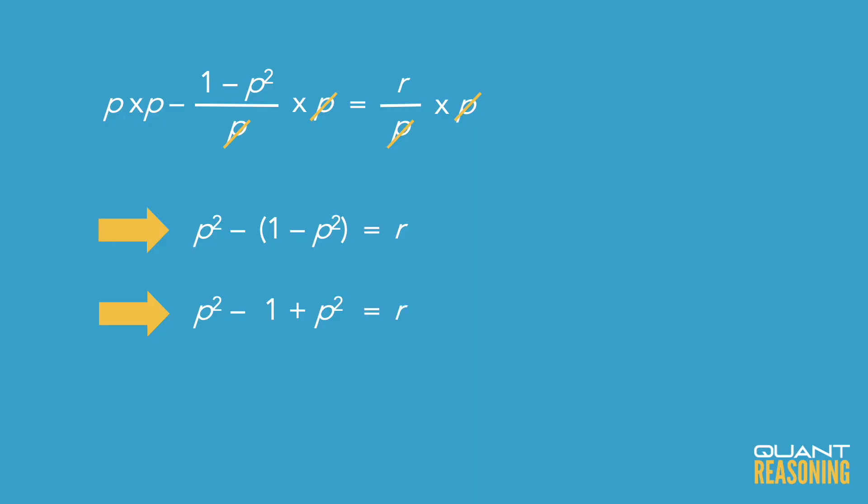So p squared minus 1 plus p squared, combine like terms, so 2p squared. Remember we've got two of them. 2p squared minus 1, that's the answer.